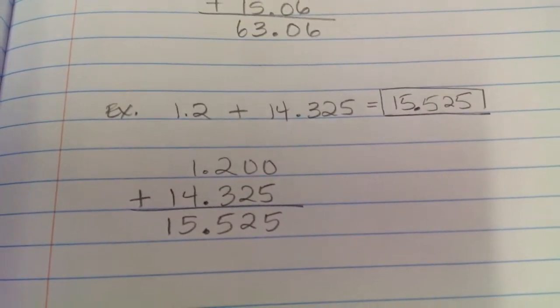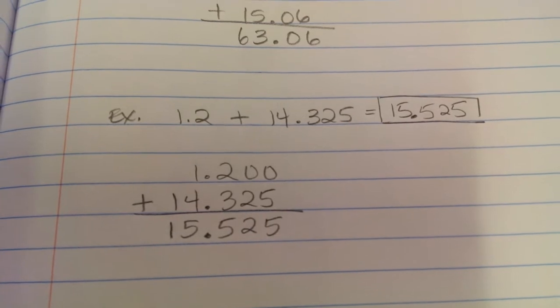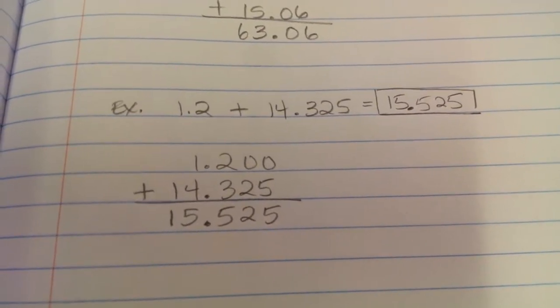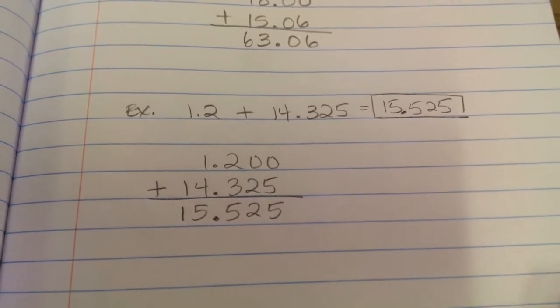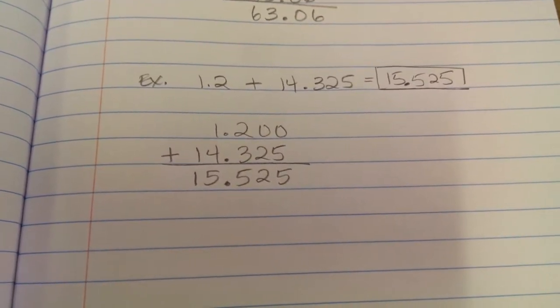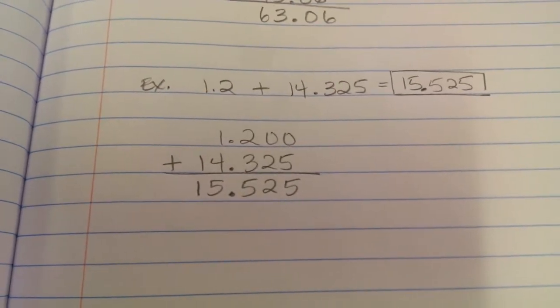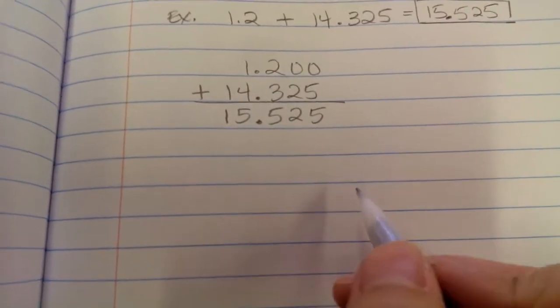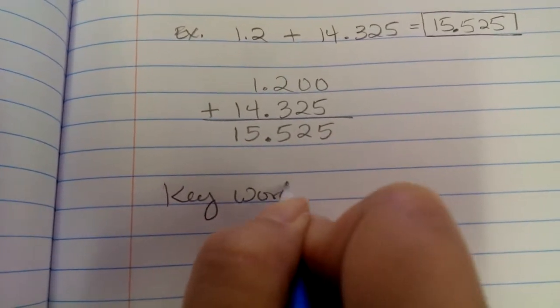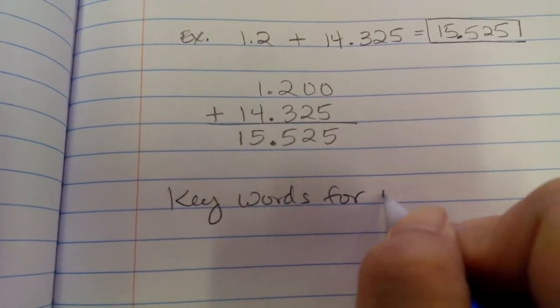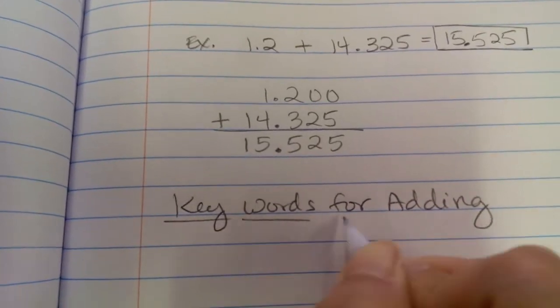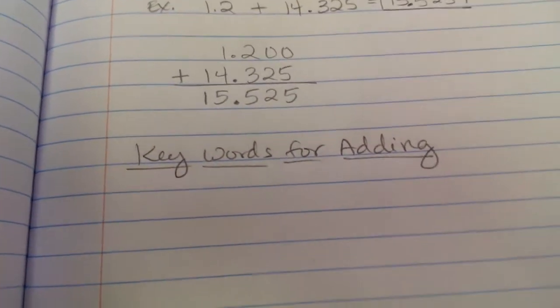So our answer for this problem is 15 and 525 thousandths. Now let's do some examples for subtracting. Oh, actually, before we do that, when you read a word problem, there are certain keywords in the word problem that tell you you're going to add. So down the bottom here, we're going to put keywords for adding.